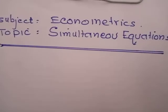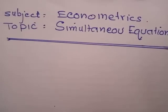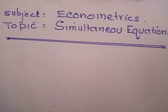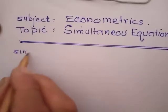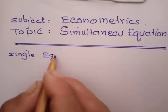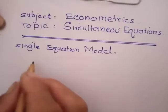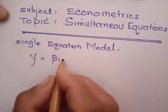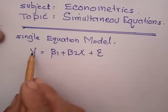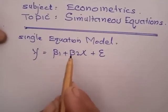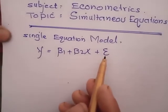The topic is simultaneous equation system and the subject is econometrics. Before this, we have discussed the single equation model written as y = β1 + β2x + ε, where y is the dependent variable, x is the independent variable, betas are parameters to be estimated, and epsilon is the stochastic term.